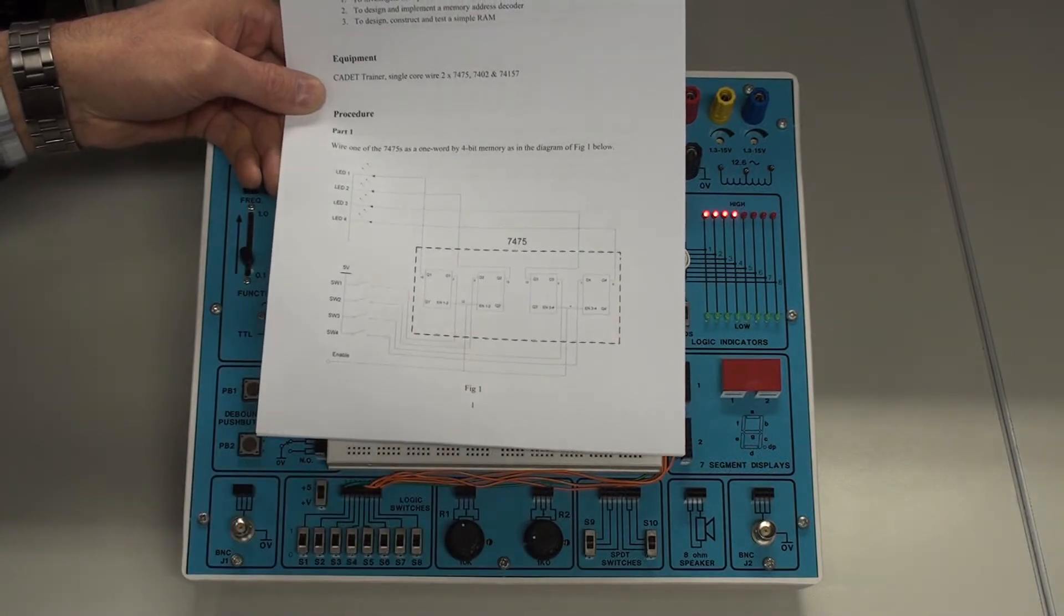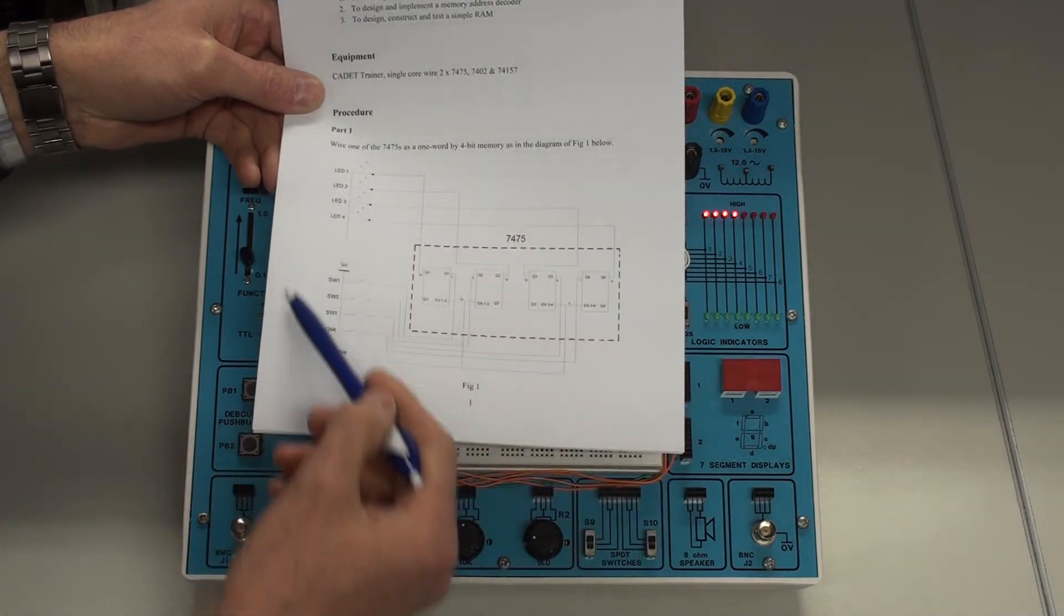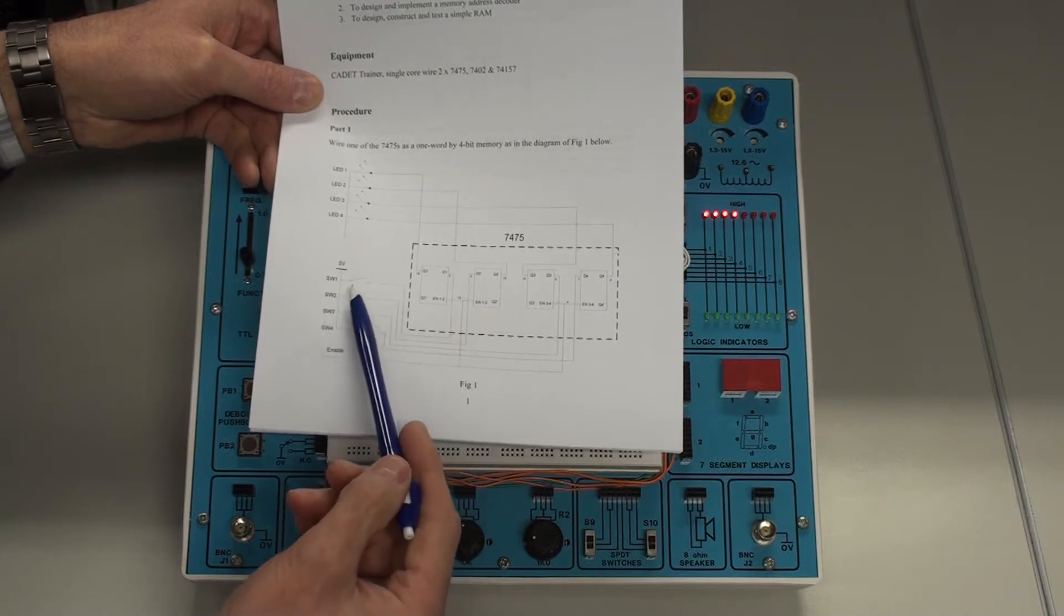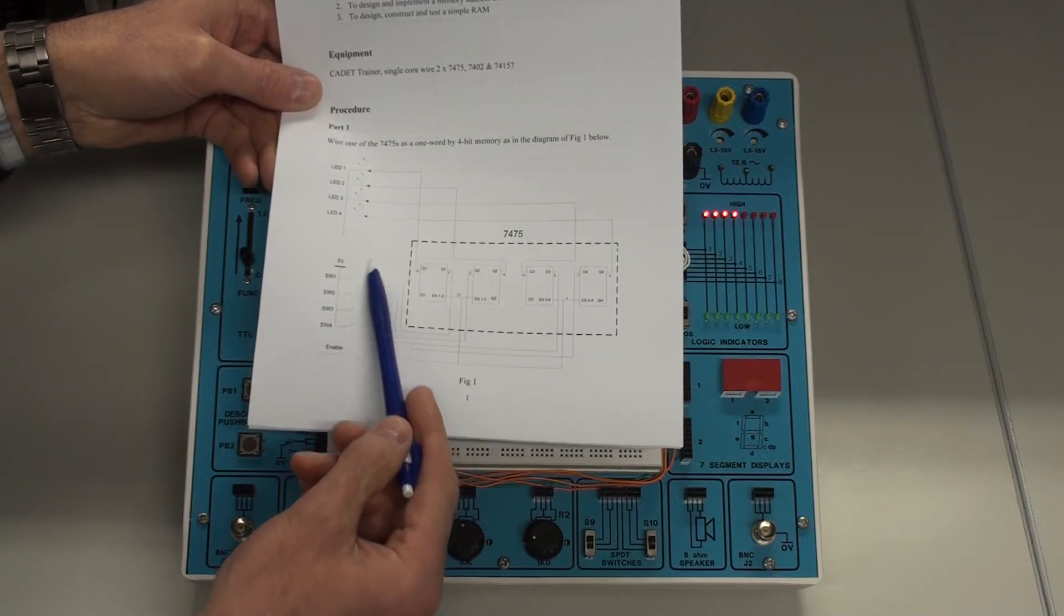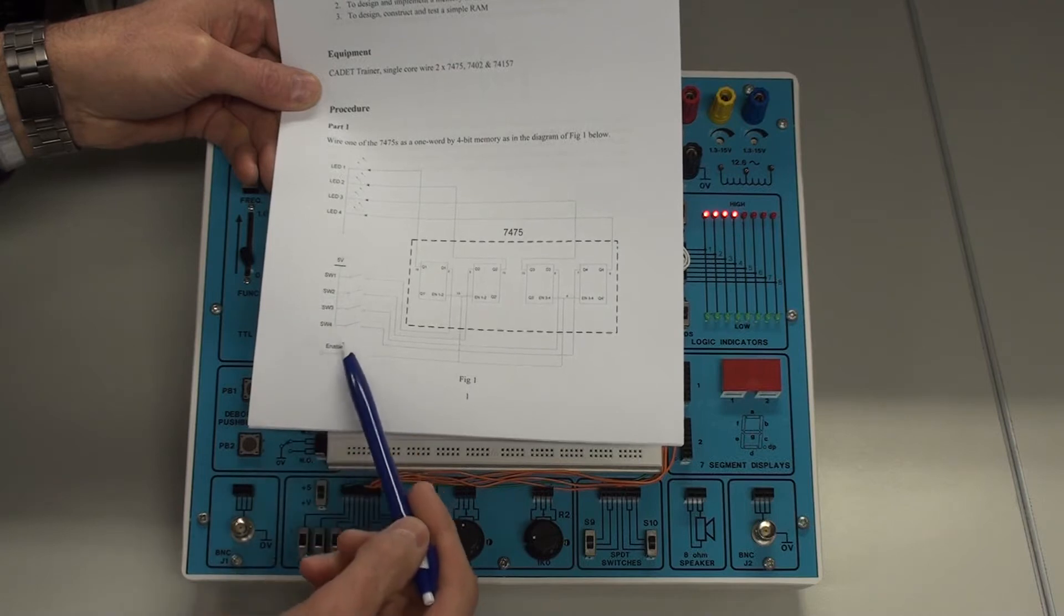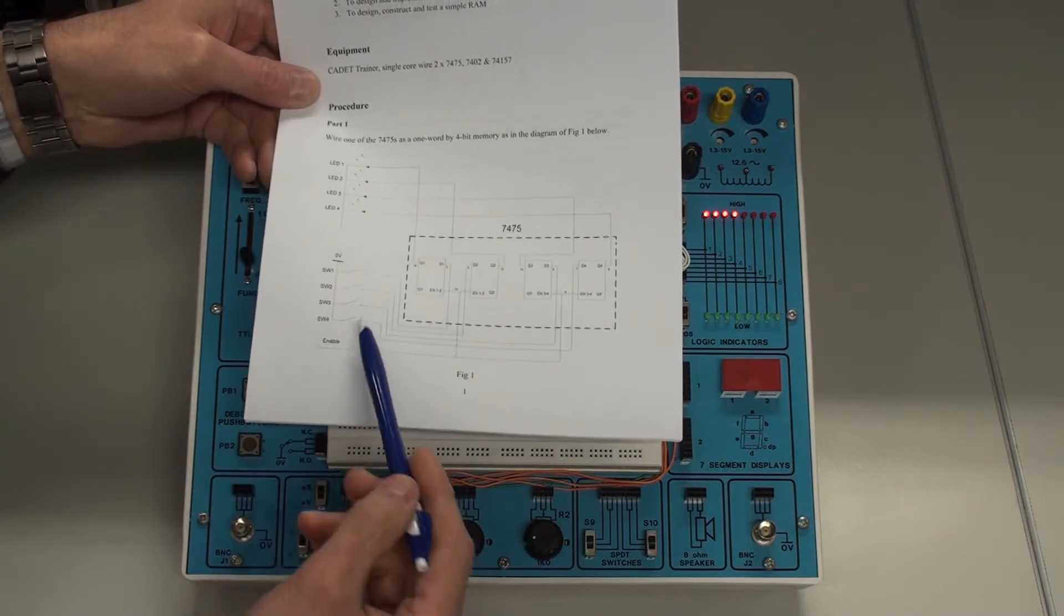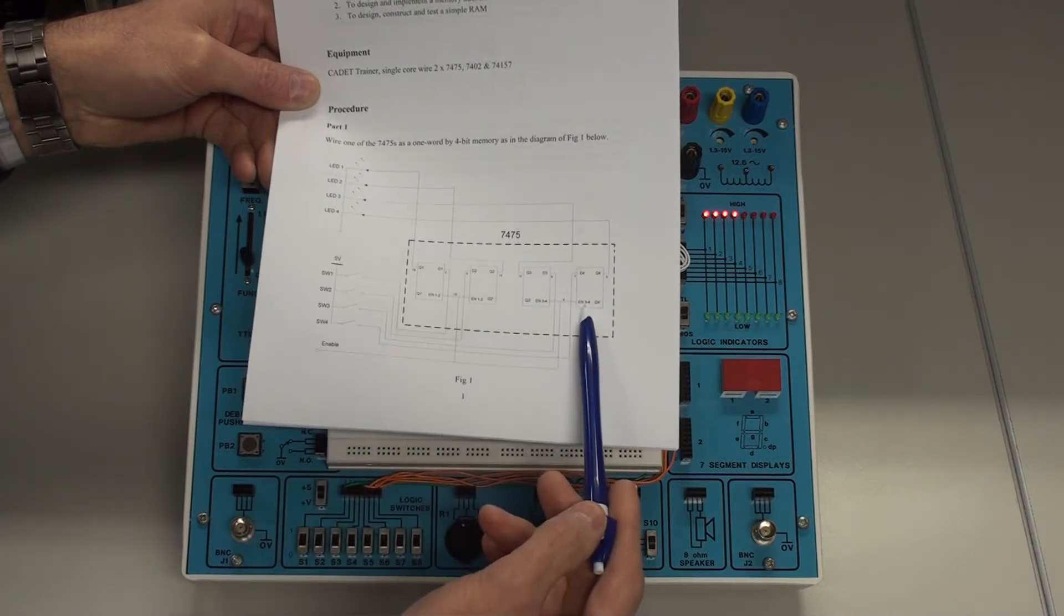So what you need to do is to build up that circuit there. Basically the way it works is when we put the information on the switches here and set the enable to high, a 4-bit word is written into the latch.